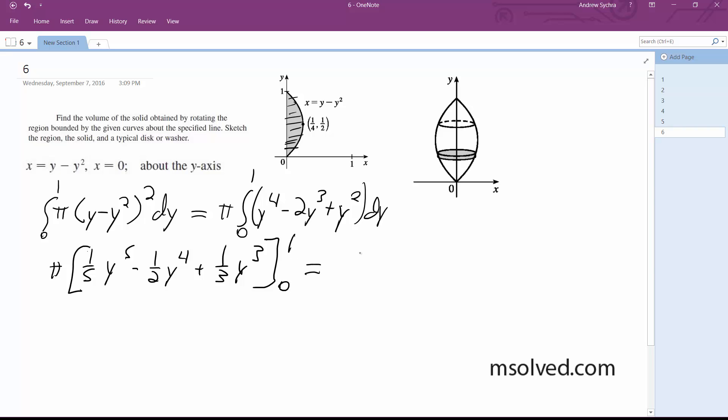And what we end up with is pi times 1/5 minus 1/2 plus 1/3 equals pi over 30. That's the volume enclosed, and that's it.